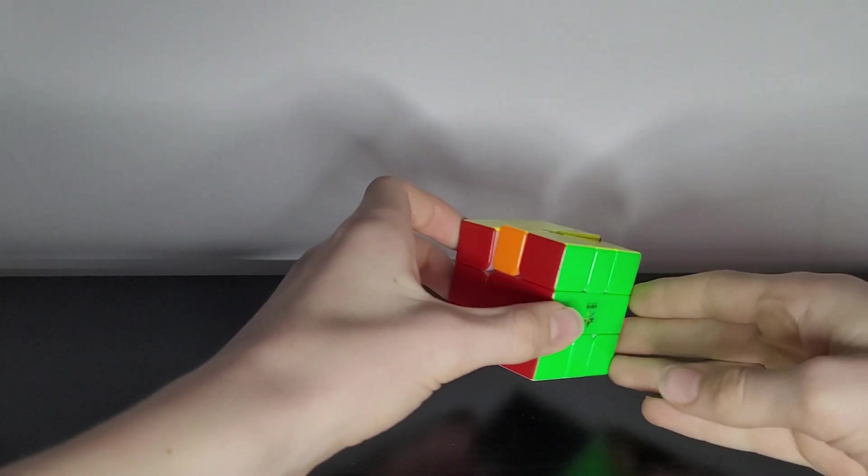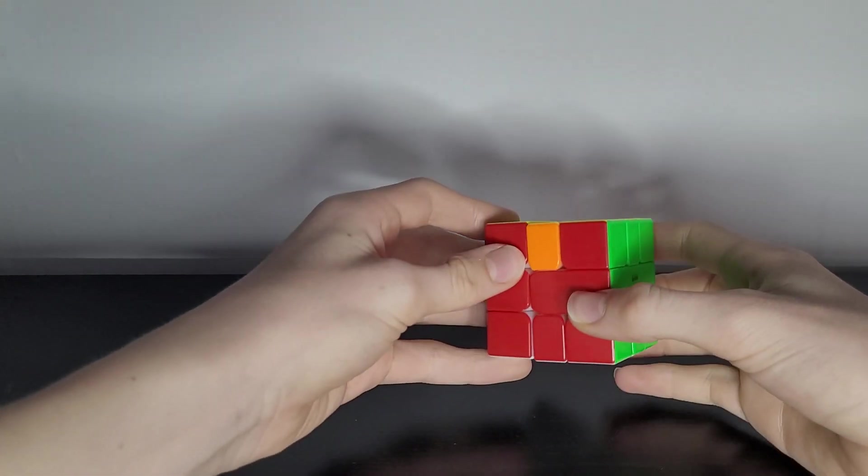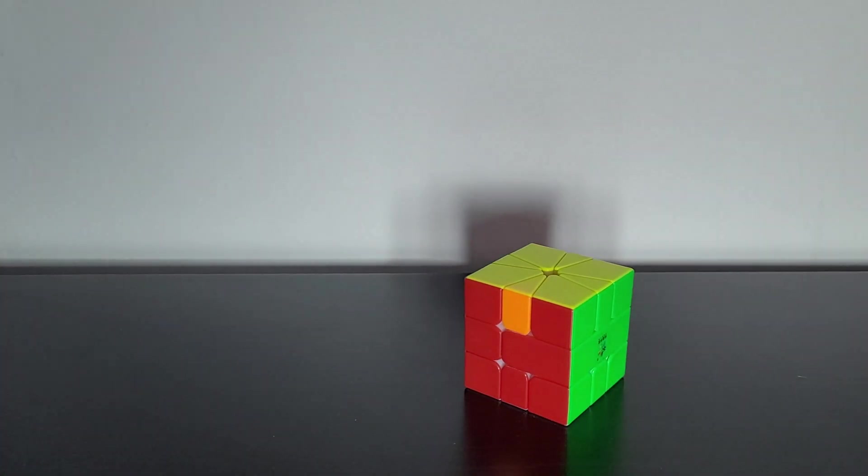So you're solving your square one and you come across a case like this. This is called parity. Today I'm going to show you two different ways to solve parity on a square one.